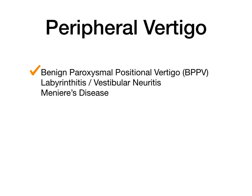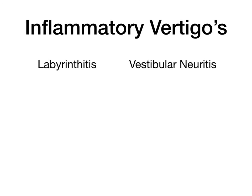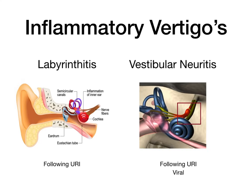Now let's talk about labyrinthitis and vestibular neuritis — the inflammatory vertigos. These are often combined in review textbooks, but technically they are two distinct disease processes. Because of the suffix -itis, you know we're talking about inflammation: labyrinthitis is inflammation of the labyrinth, and vestibular neuritis is inflammation of the vestibulocochlear nerve. Because of their close anatomical proximity, a continuous spectrum of inflammation can occur, which is why they're historically grouped together.